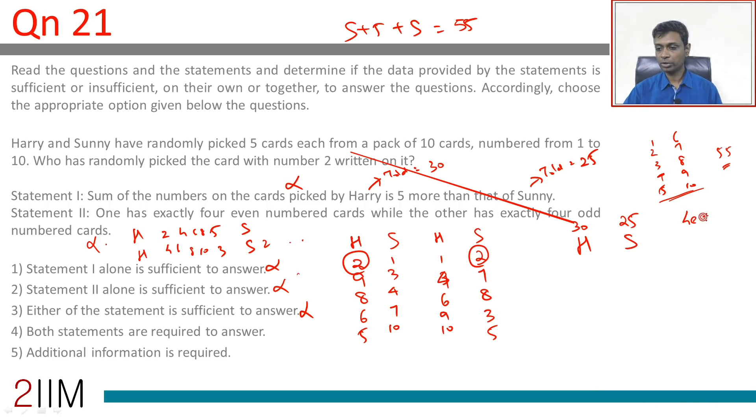We have 4 even numbers plus an odd number, which will be odd. And 4 odd numbers plus an even number, which will be even.